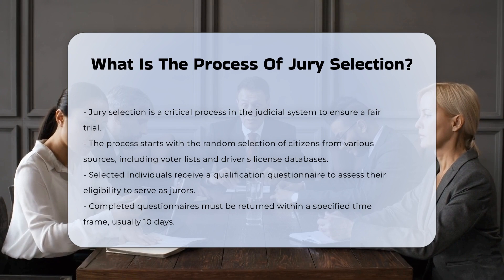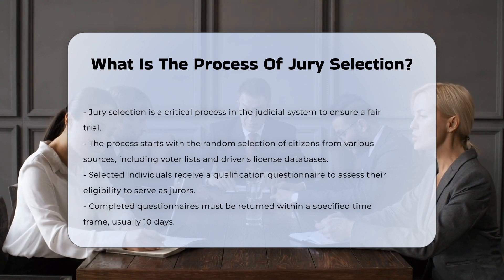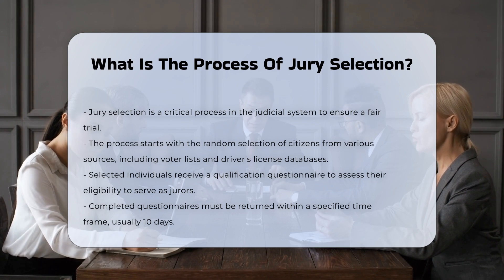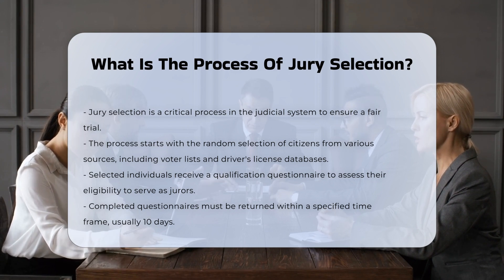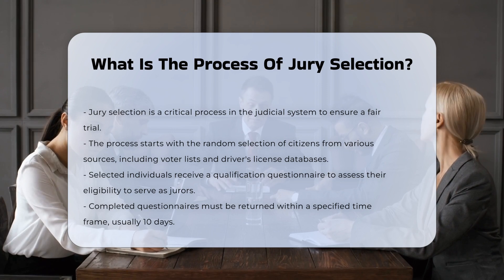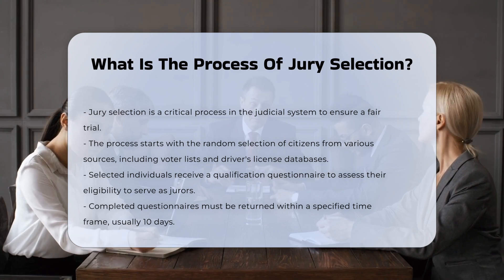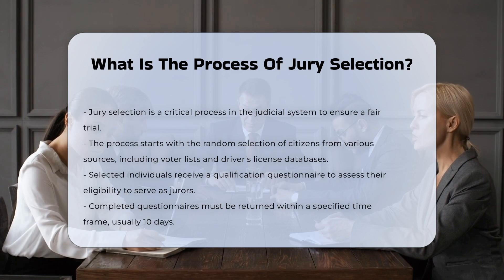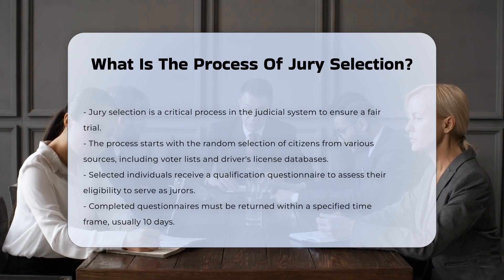Initial selection: The journey begins with the random selection of qualified citizens from various sources, including state voter lists, lists of licensed drivers, and sometimes other databases like phone books or state unemployment benefit records. These individuals are mailed a qualification questionnaire to determine their eligibility to serve as jurors. They must complete and return this questionnaire within a specified time frame, usually 10 days.